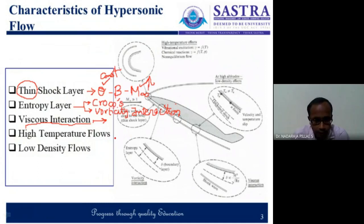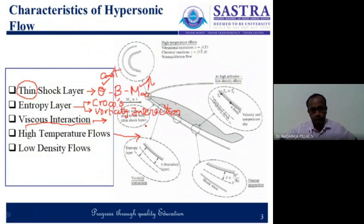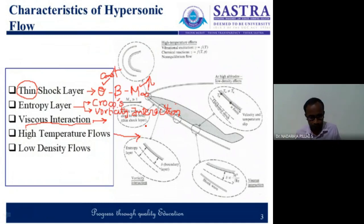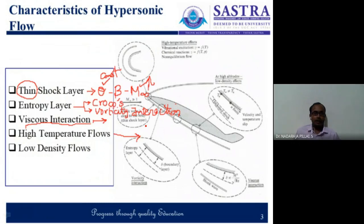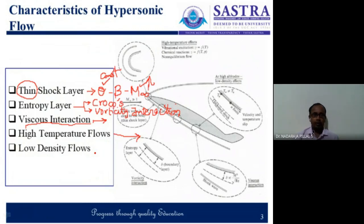Then we had a discussion on high temperature flows — the vibrational excitation at high temperatures, then dissociation, then at last ionization of the air molecules. The temperature can go up to 9000, 10,000, 11,000 Kelvin. Then comes the low density flows — because of the higher altitude, the density decreases and hence low density. At very low density, the molecules' mean free path is quite high.